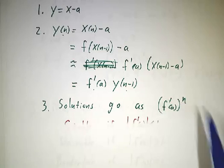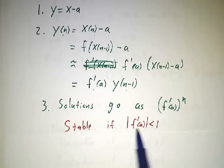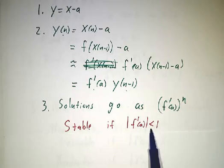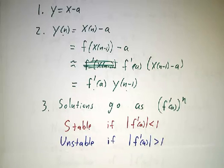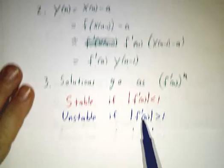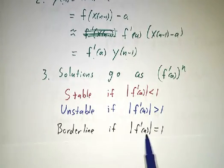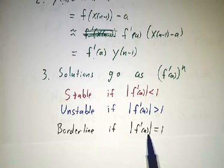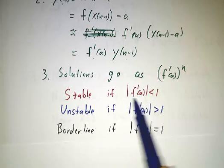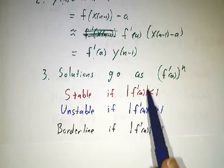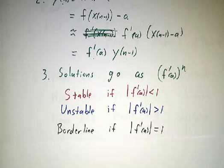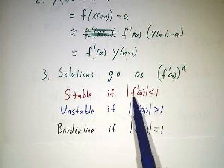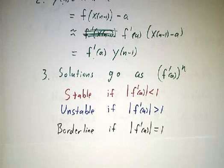And that means that solutions are going to go as f prime of a to the nth power. And how do those behave? Well, if f prime of a is smaller than 1, they shrink and we say it's stable. If f prime of a is bigger than 1, they grow and it's unstable. If f prime of a is equal to 1, they neither grow nor shrink and we say it's borderline. And what matters is the size of f prime of a. It doesn't matter whether it's positive, negative, complex. What you care about is the magnitude. So negative 3 has magnitude 3 that would grow very quickly.